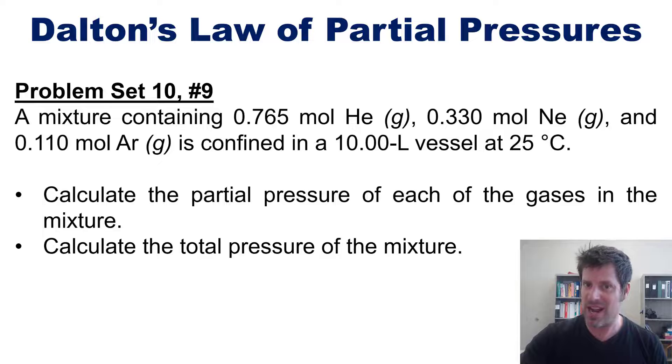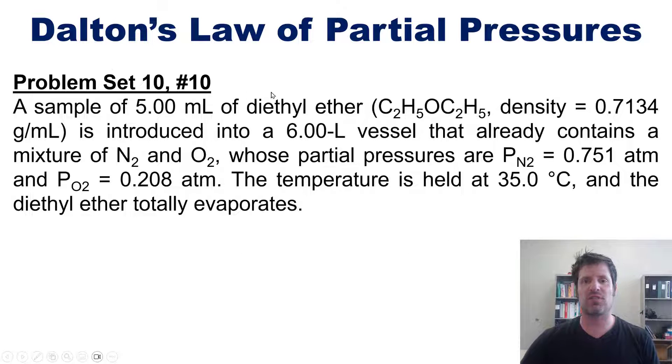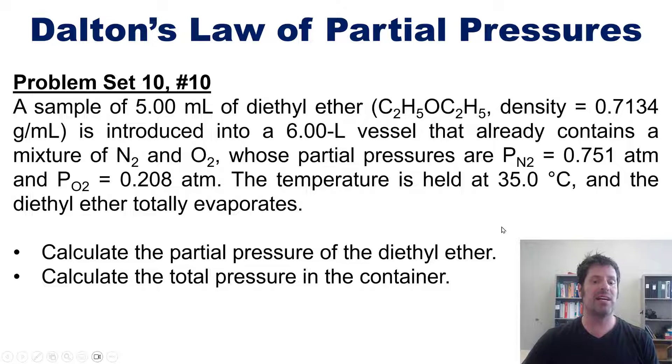Which takes us to another beautiful problem. A sample of 5 milliliters of diethyl ether, formula and density shown right here, is introduced into a 6 liter vessel that already contains a mixture of N2 and O2 gases whose partial pressures are these numbers right here. The temperature is held constant at 35°C and the diethyl ether totally evaporates, which means it converts completely to a gas. With that background, can you calculate the partial pressure of diethyl ether, then calculate the total pressure in the container of all three gases? Again, I'm not going to solve this for you, but invite you to click a link in the description below that takes you to a separate video in which I do.